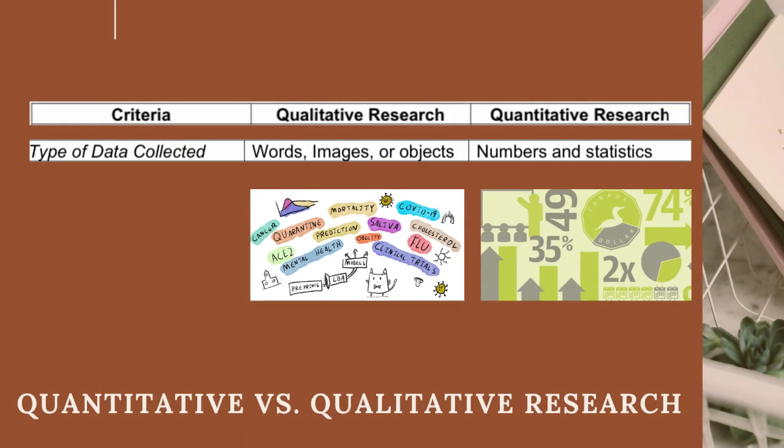Type of data collected: Qualitative research collects words, images, or objects. Quantitative research collects numbers and statistics.